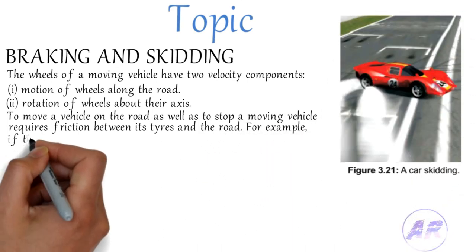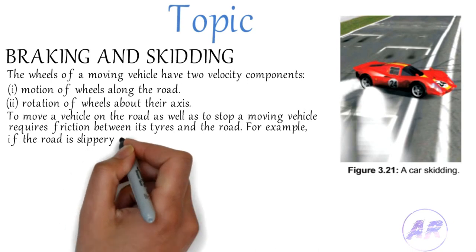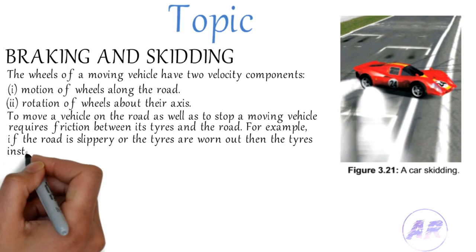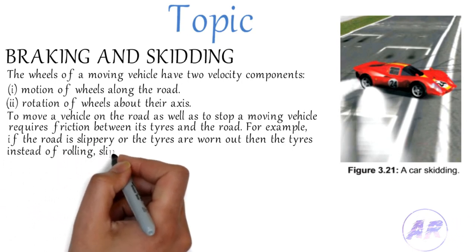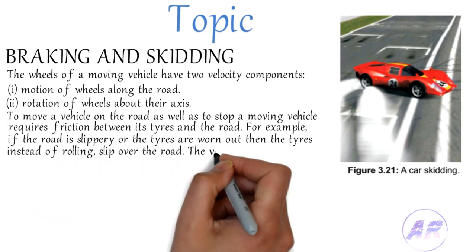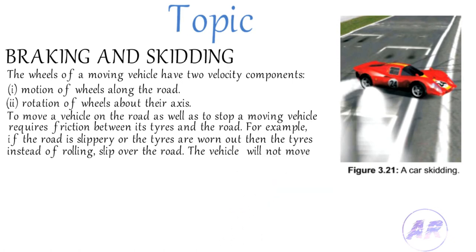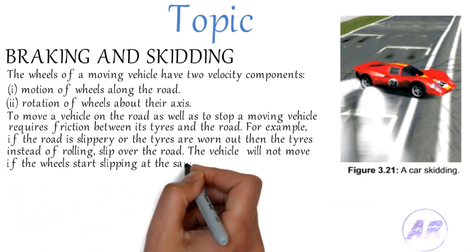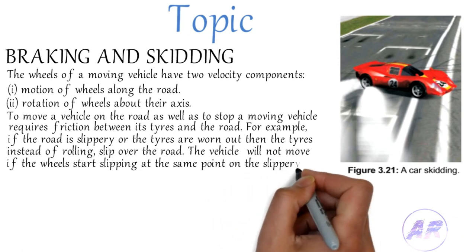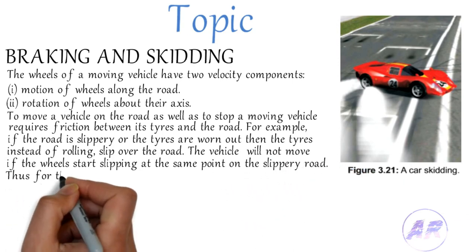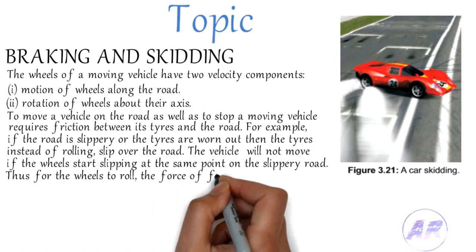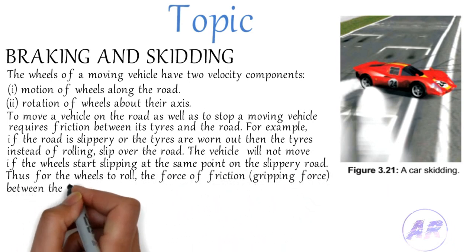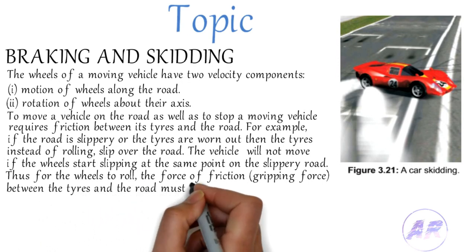If the road is slippery or the tires are worn out, then the tires instead of rolling slip over the road. The vehicle will not move if the wheel starts slipping at the same point on the slippery road. Thus, for the wheels to roll, the force of friction — the gripping force between the tires and the road — must be enough to prevent them from skidding.